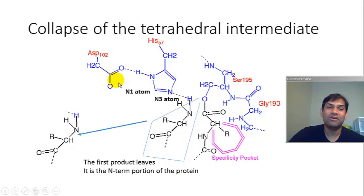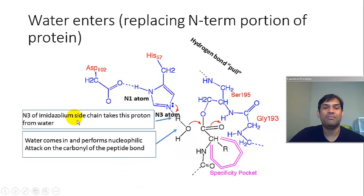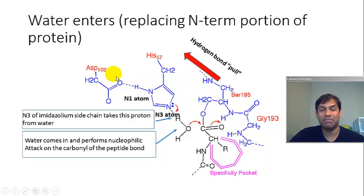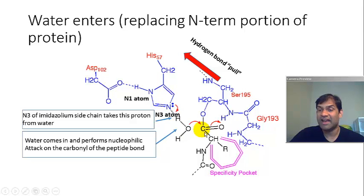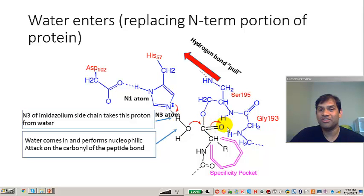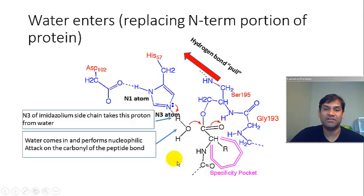The next step is that a water molecule comes in and enters the active site. We still have those hydrogen bonds from aspartic acid and histidine pulling in this direction, but this time the pulling acts on this water molecule. The N3 atom of the histidine imidazolium side chain pulls on a hydrogen of water, making the oxygen very nucleophilic. It performs a nucleophilic attack on the carbonyl group attached to the serine, the pair of electrons goes to the oxygen, and we have a second tetrahedral intermediate.